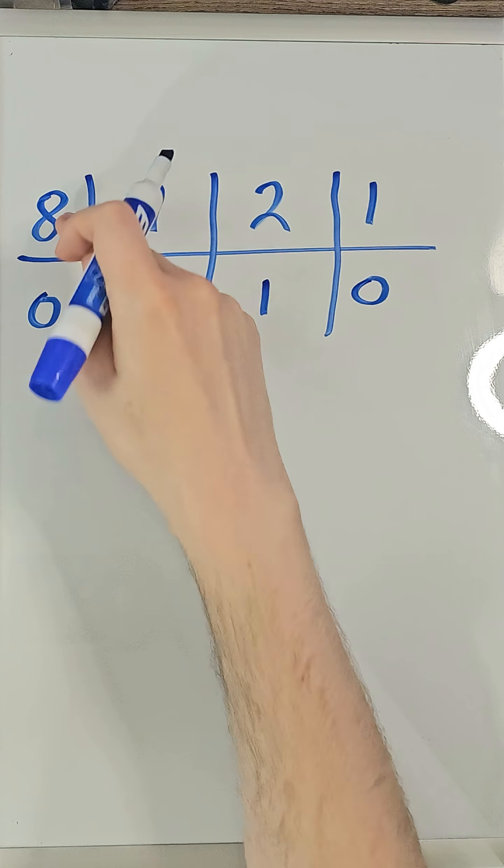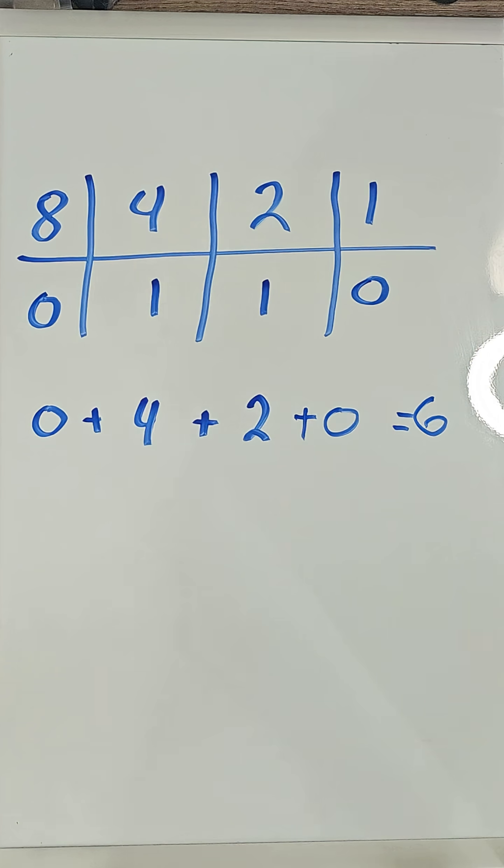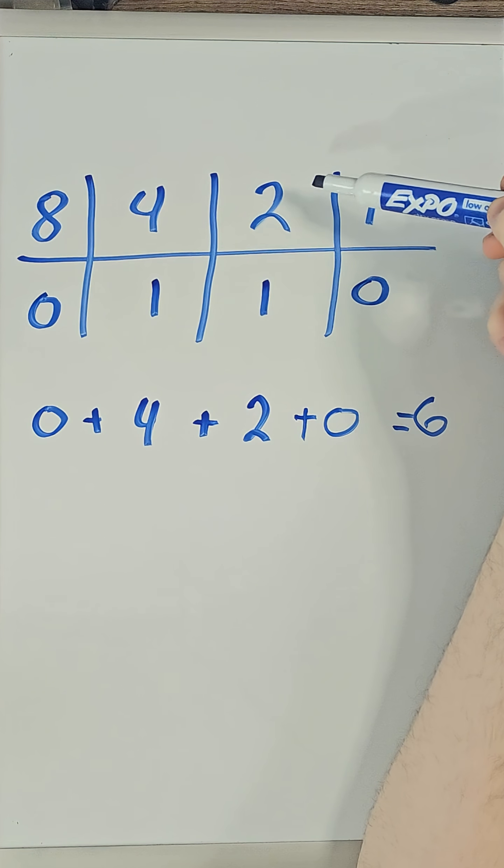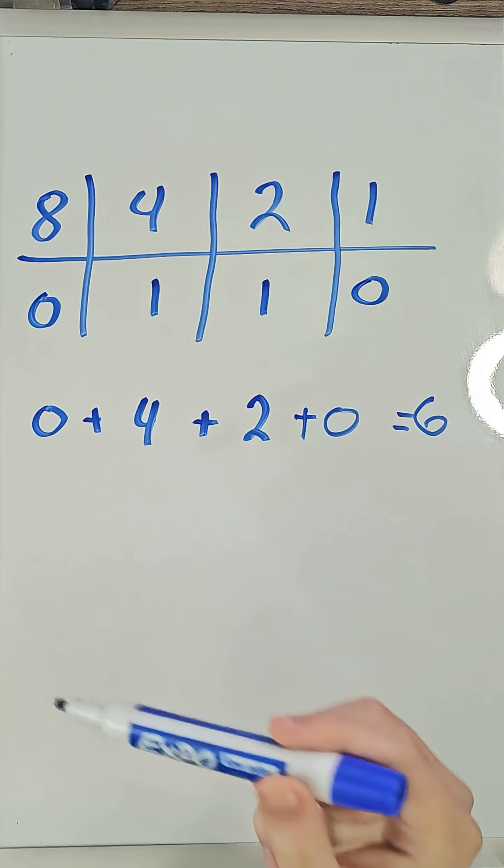For example, 0110 is 6. That is because the third bit, which represents 4, and the second bit, which represents 2, are both turned on. So that leaves us with 6.